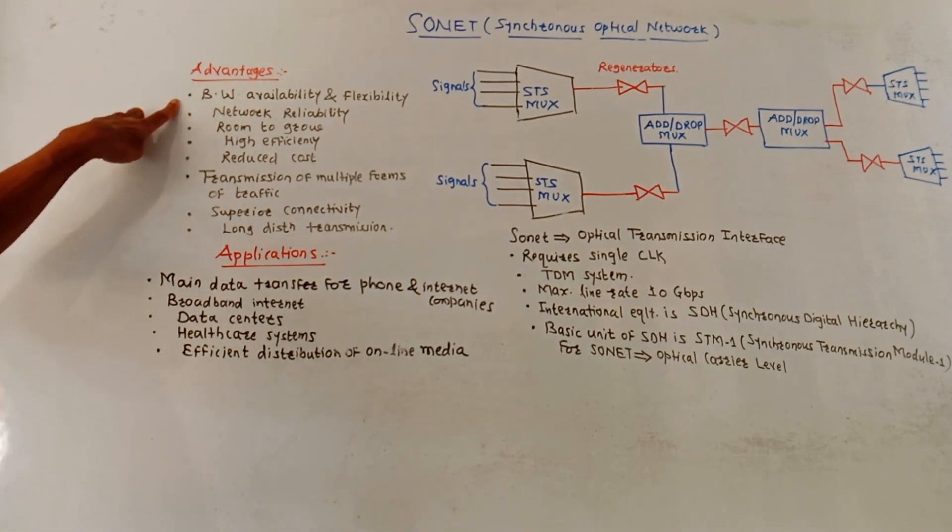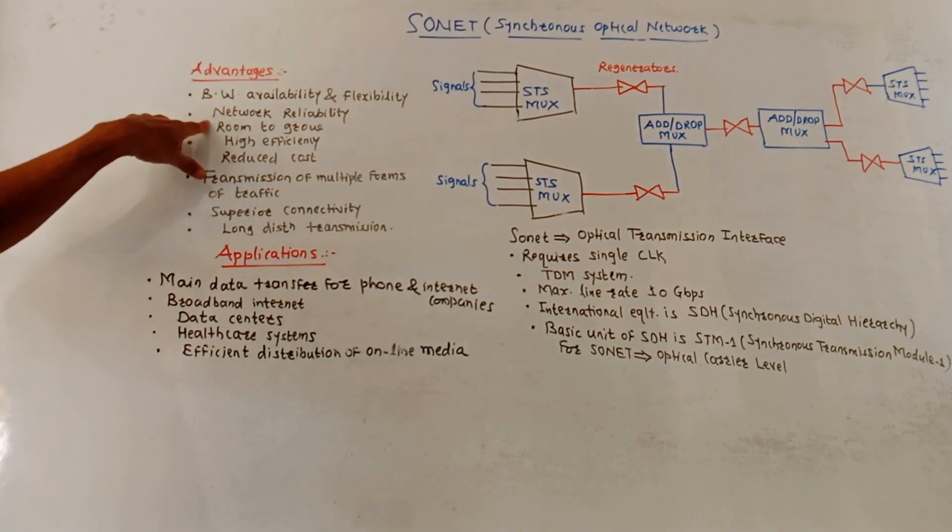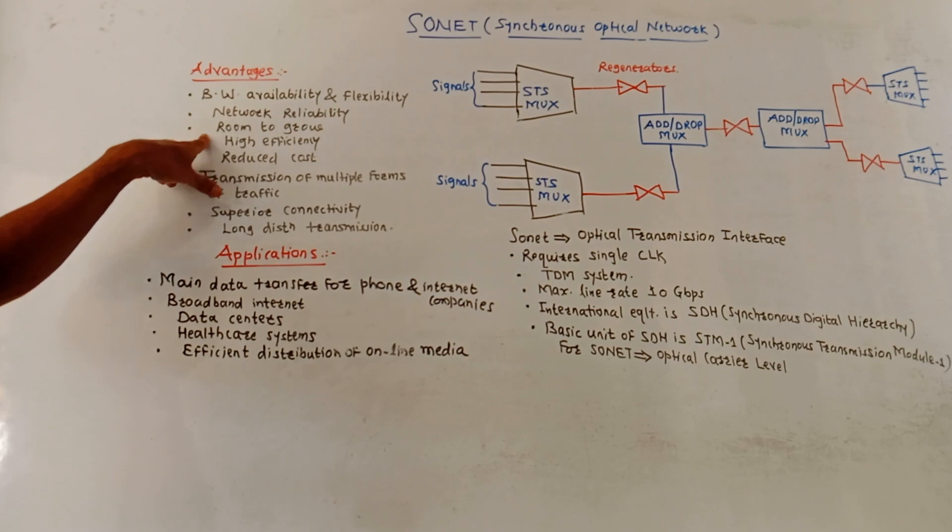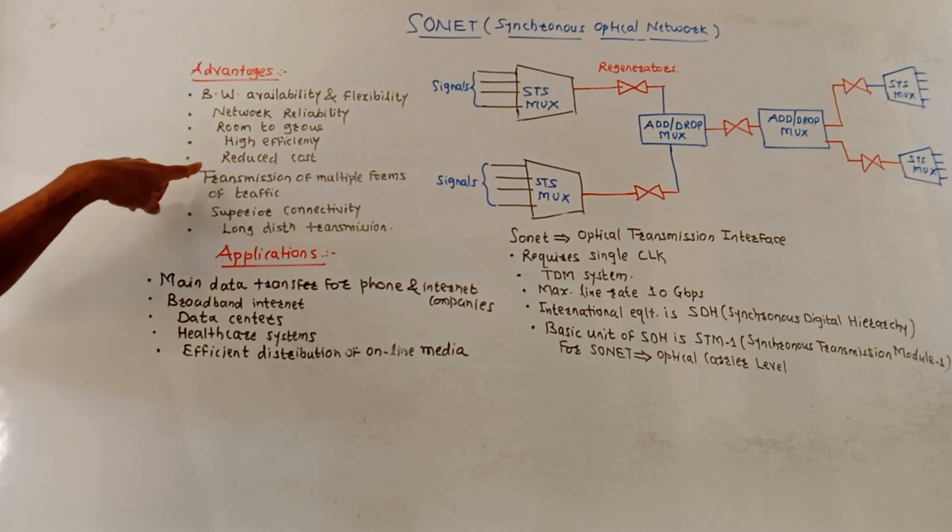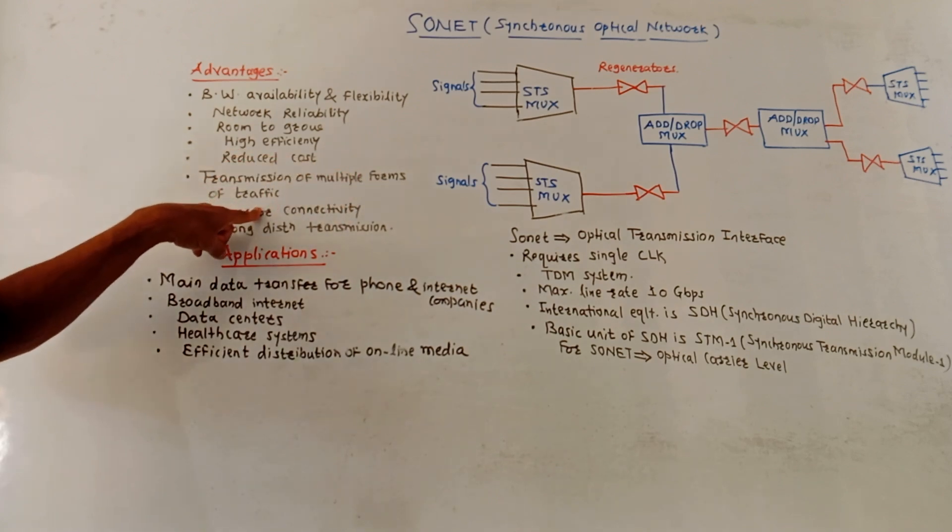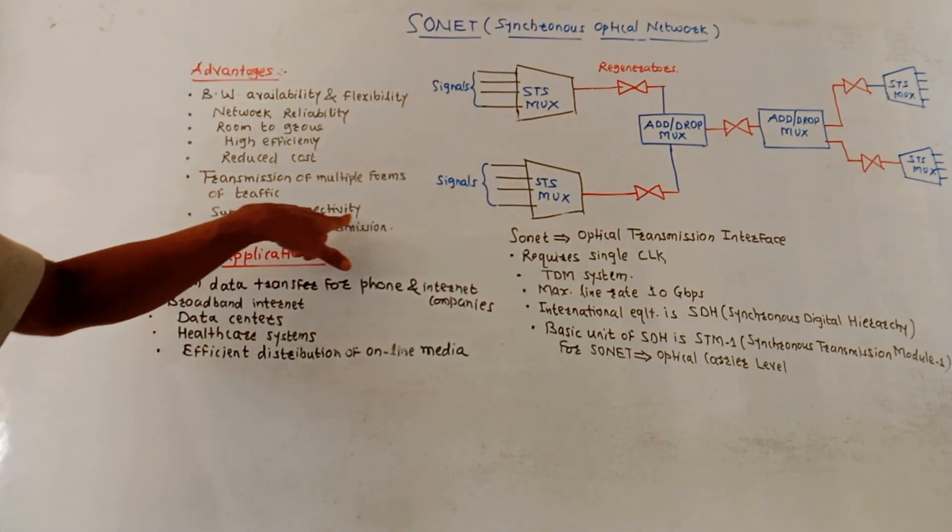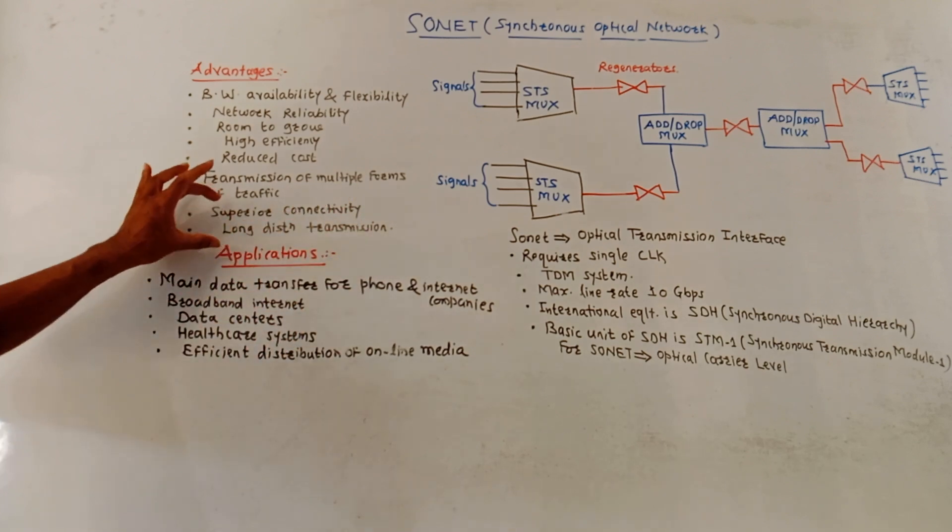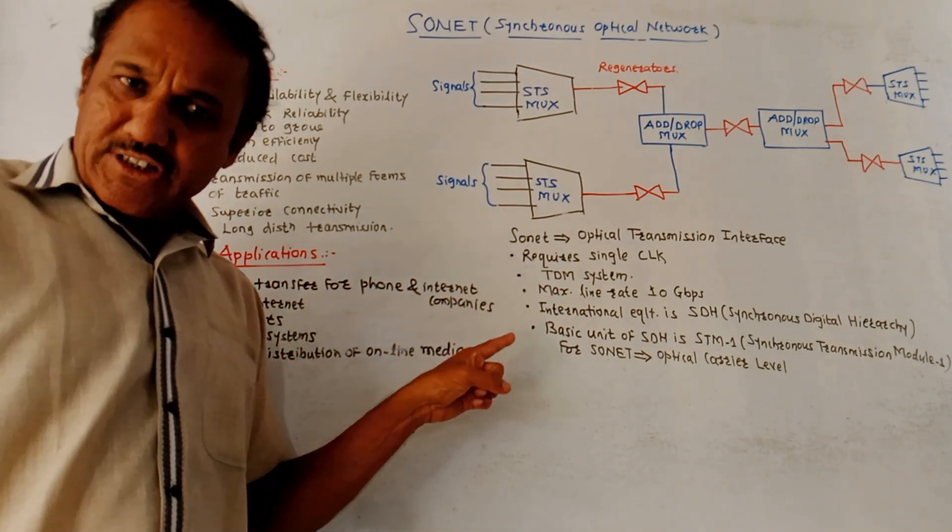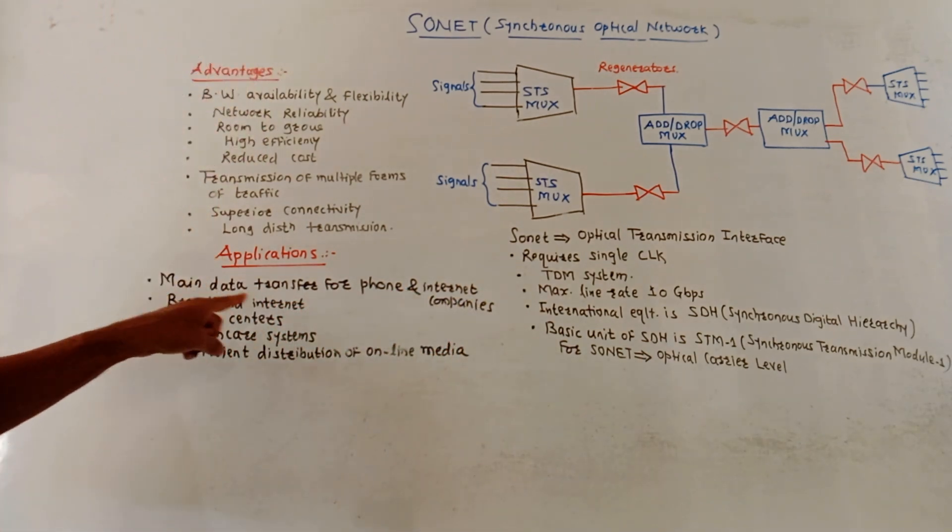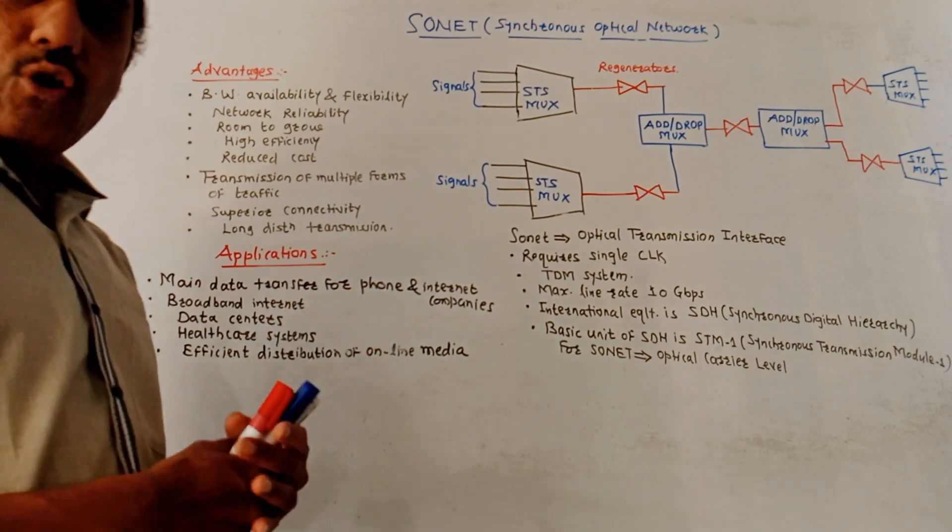Now, certain advantages. First advantage is bandwidth availability and flexibility. Large bandwidth is available. Then network reliability, room to grow. We can well expand the network as per the requirement. High efficiency, reduced cost. Transmission of multiple forms of traffic. Different types of traffic can be transmitted using this interface. Then superior connectivity and long distance transmission. Its application includes main data transfer for phone and internet companies. Then broadband internet, data centers, healthcare systems, and efficient distribution of online media. So, this is about the SONET structure.